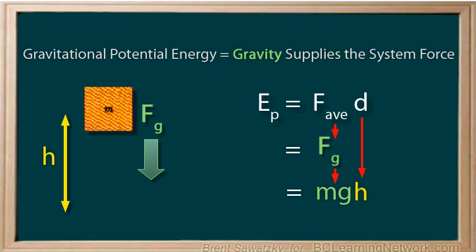So we really have one main equation for potential energy, Ep equals F times d, but we also have a version of this equation that's really handy for questions where we're dealing with gravitational potential energy. And that one is Ep equals mgh.